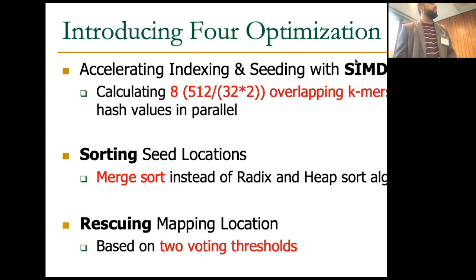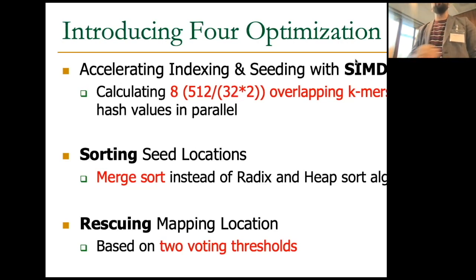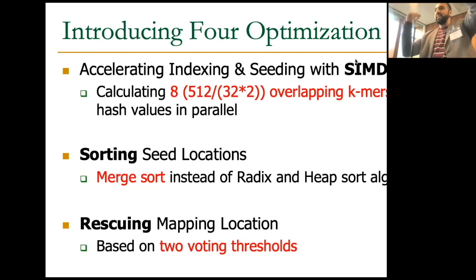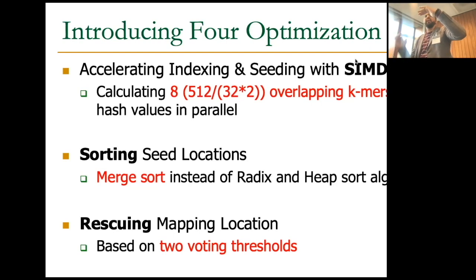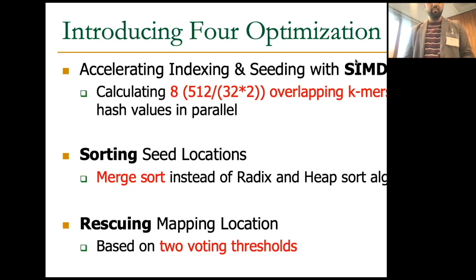There are additional optimizations we perform, such as AVX acceleration of the seeding step — how you collect those minimizers. Surprisingly, until now this is done sequentially in Minimap2: you collect all overlapping seeds, calculate all hash values, then decide which one has the minimum hash value to keep in the index — all sequential. We did AVX acceleration for that and some other optimizations.